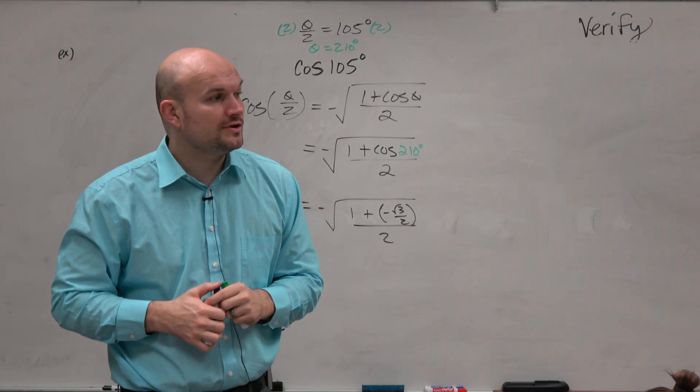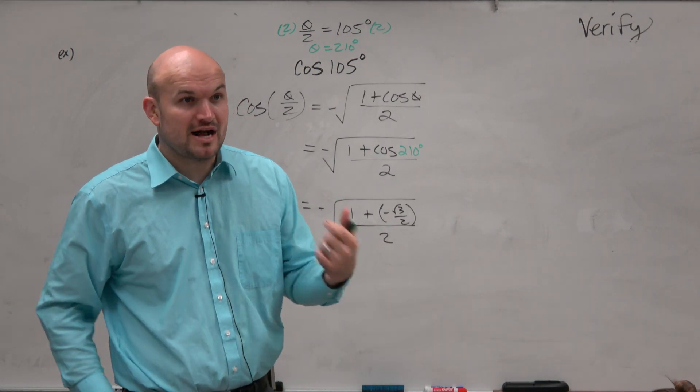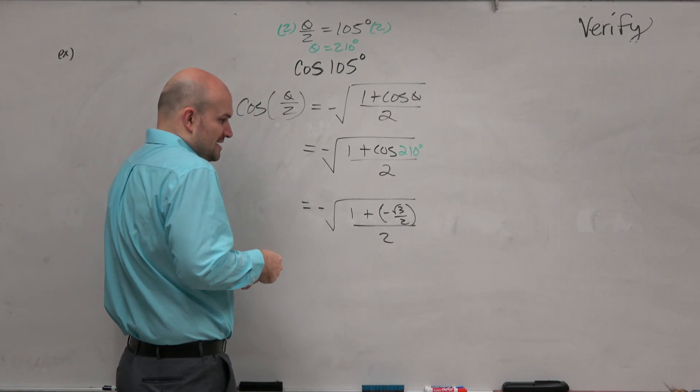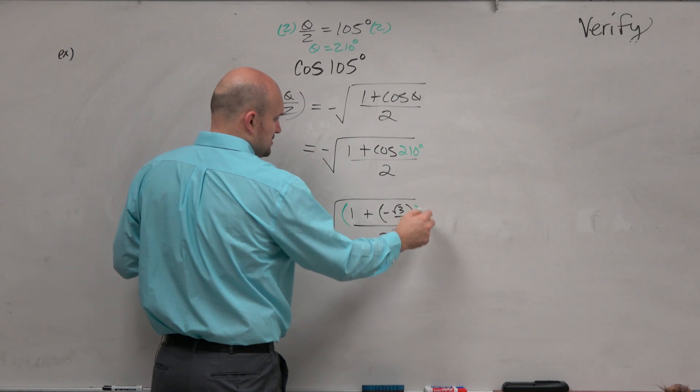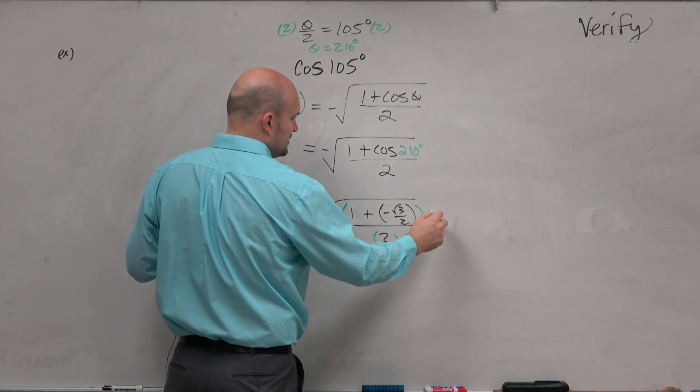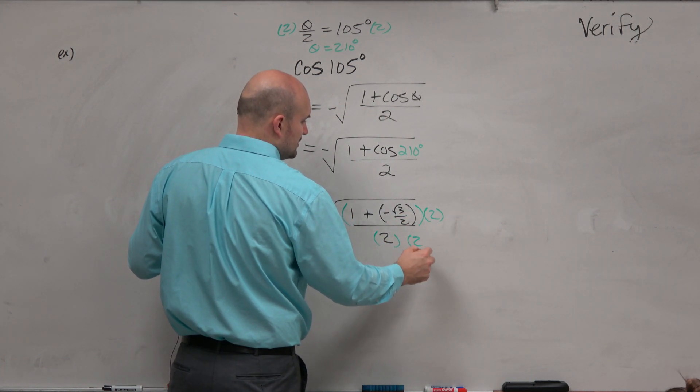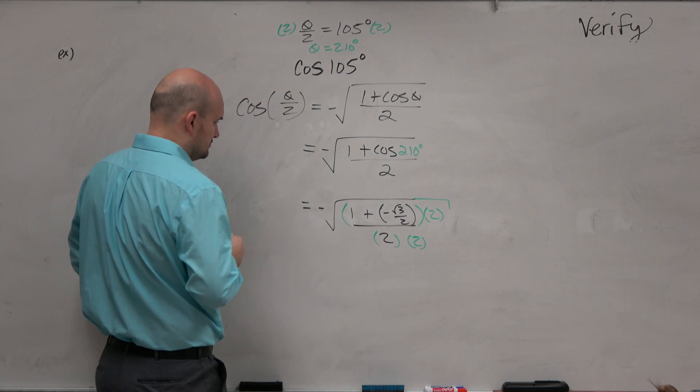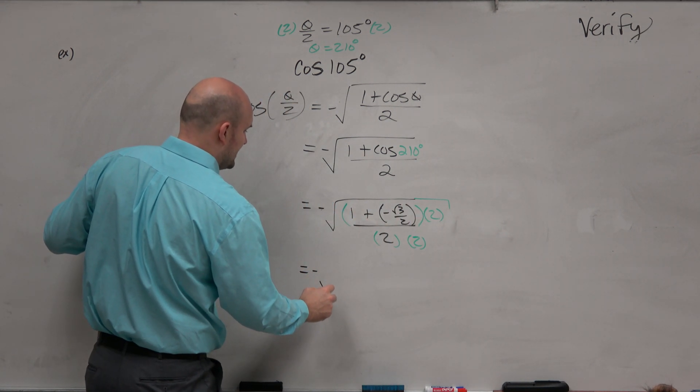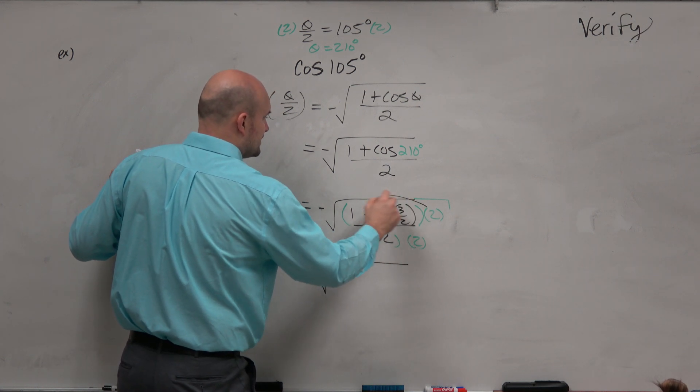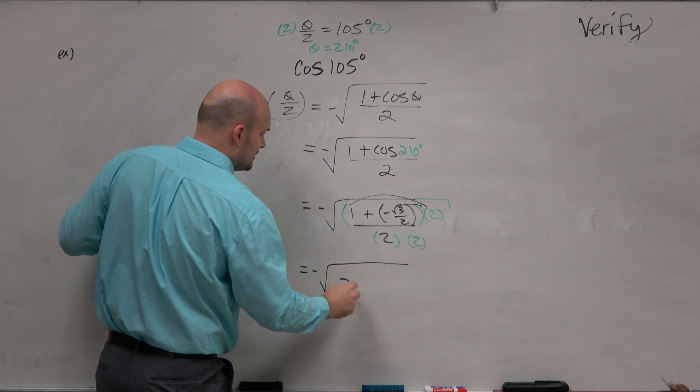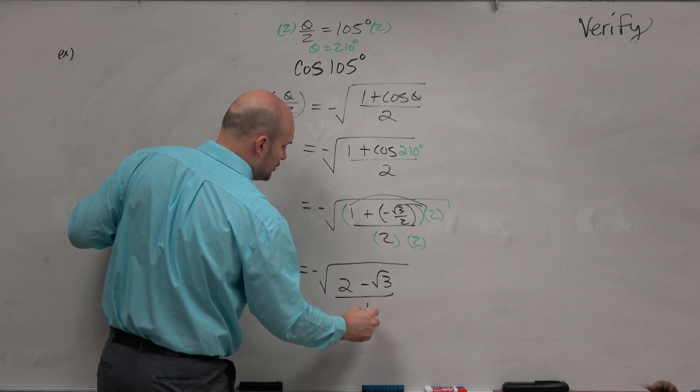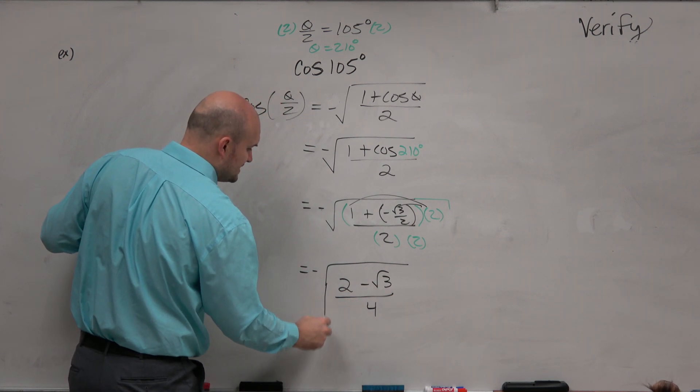OK, so now under the radical, we have a complex fraction. We have fractions within fractions, right? So what have we been practicing in fractions and fractions? Get rid of it. So to do that, you're going to multiply by 2 over 2. This is still under the radical. So we have negative square root. Don't forget to apply distributive property. 2 minus the square root of 3 all over 4.